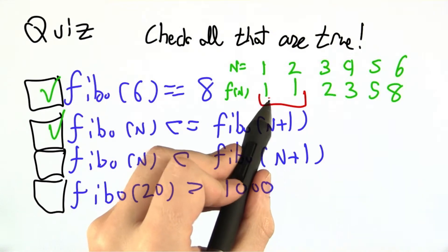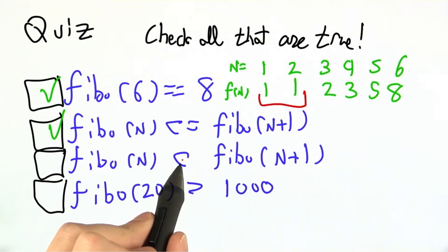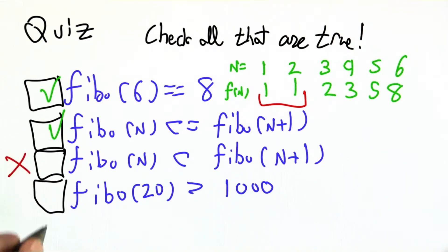except right here at the start when Fibonacci of 1 and Fibonacci of 2 are both 1. So they're equal rather than less than, so no dice there.